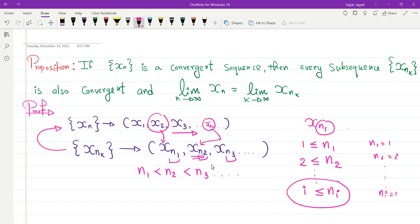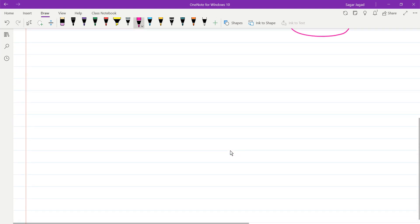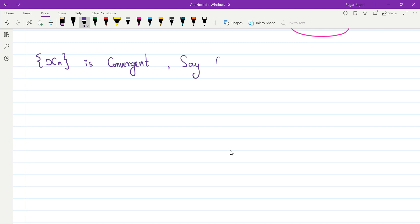Now just come to the result: every subsequence is convergent and converges to the same point. What we know is we know that this sequence is convergent. Let us just try to use that result. If we know that xn is convergent, if it is convergent, say converges to a point a.